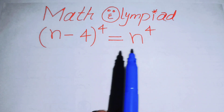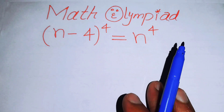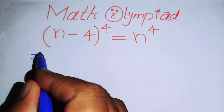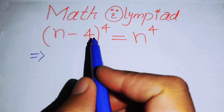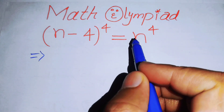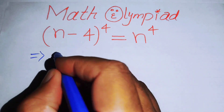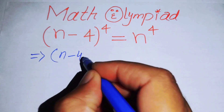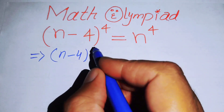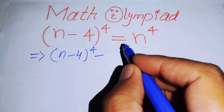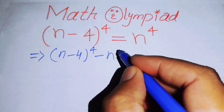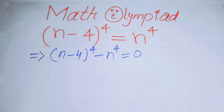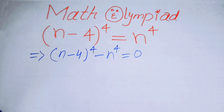The very first thing we are going to do is rearrange this equation. We move n to the power of 4 to the left hand side and write it as (n minus 4)⁴ minus n⁴ equals 0.